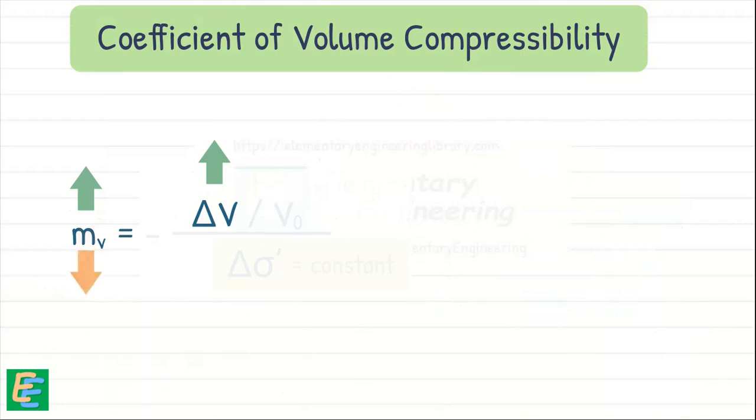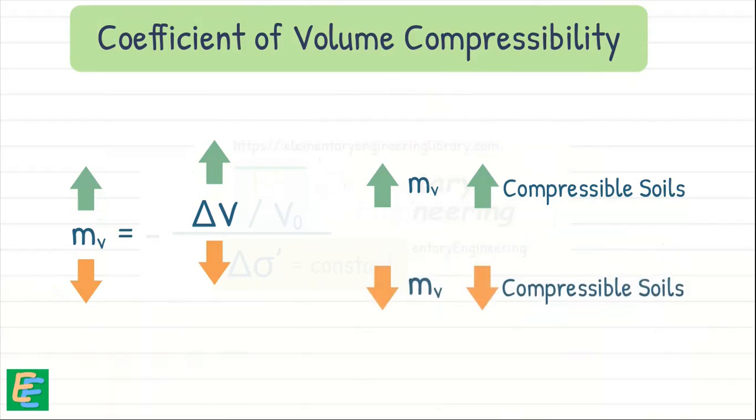Conversely, a lower value of MV will result in smaller volume change. So it can be said that soils with higher MV value are more compressible, meaning even a small change in stress can lead to a large change in their volume and vice versa.